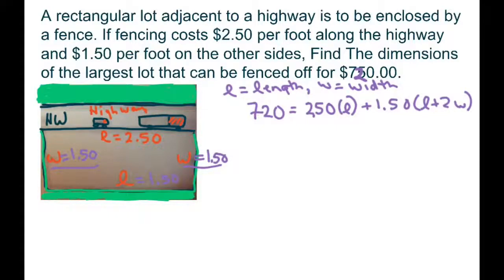And simplifying that, we get $7.20 equals $2.50 per length, plus $1.50 per length, plus $3 if you multiply those two, per width.